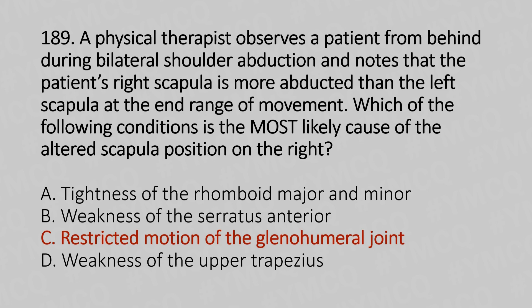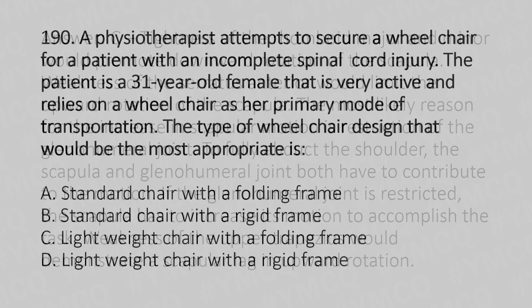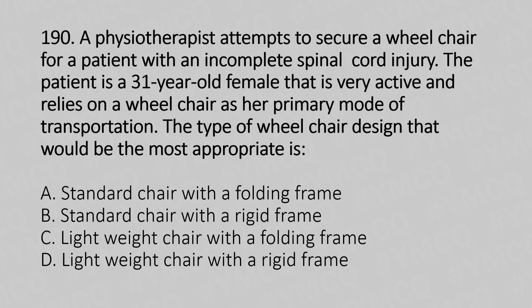The answer is Option C: restricted motion of the glenohumeral joint. Tightness of the rhomboid major and minor would promote downward rotation of the scapula. Weakness of serratus anterior would limit upward rotation of the scapula. The most likely reason for increased scapular motion is restriction of the glenohumeral joint. To fully elevate the shoulder, both the scapula and glenohumeral joint must contribute to motion; if the glenohumeral joint is restricted, the scapula must increase its motion to accomplish the task. Weakness of the upper trapezius would demonstrate lagging scapular upward rotation.